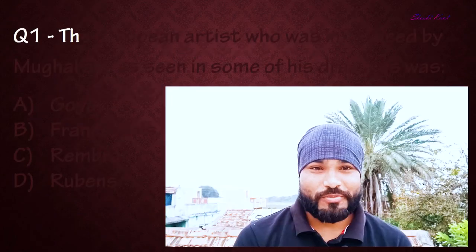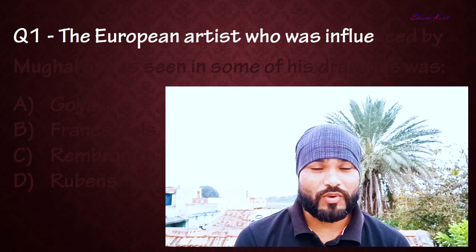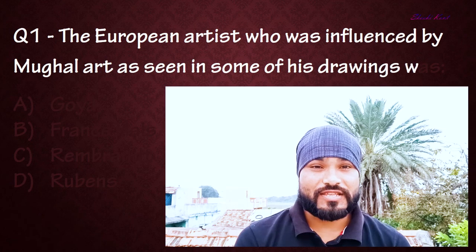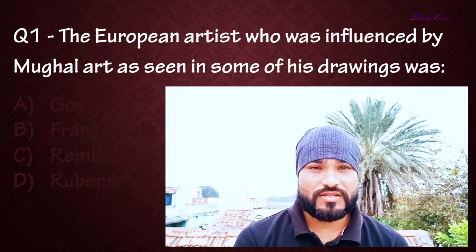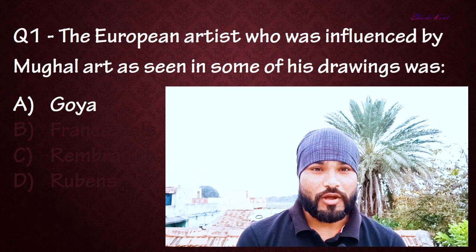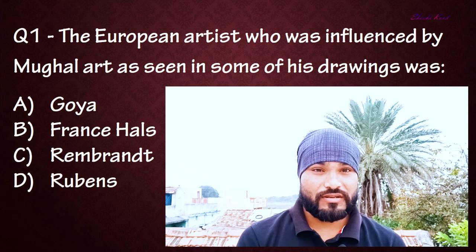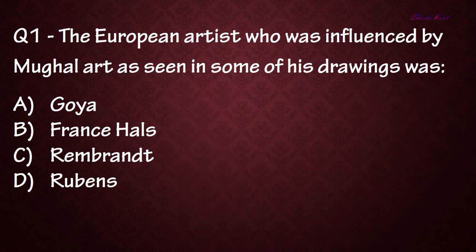Question number one: Which European artist was influenced by Mughal art, as seen in some of his drawings? Option A: Goya, Option B: Fragonard, Option C: Rembrandt, Option D: Rubens. The correct answer is C: Rembrandt.